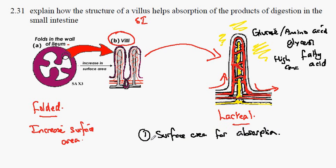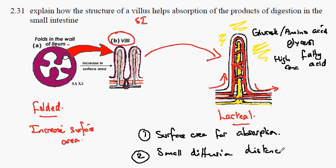The second thing that the villi structure does is have a small diffusion distance, meaning that diffusion occurs fast. The molecules which need to be absorbed are out here, and the blood vessel is just a short distance away, meaning that they can diffuse from here into the bloodstream very quickly.